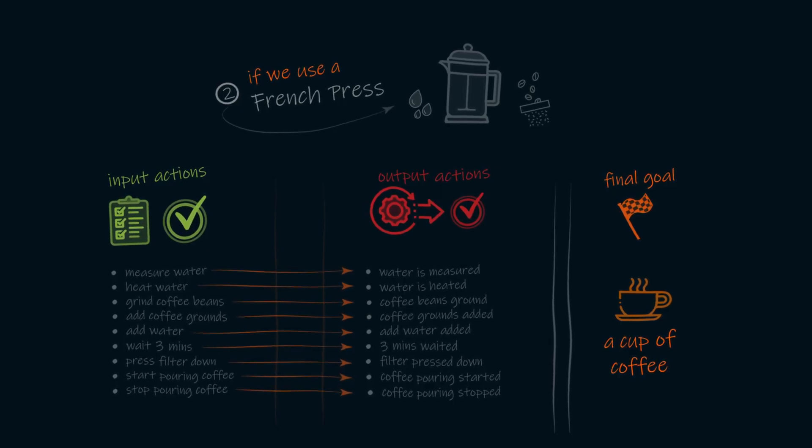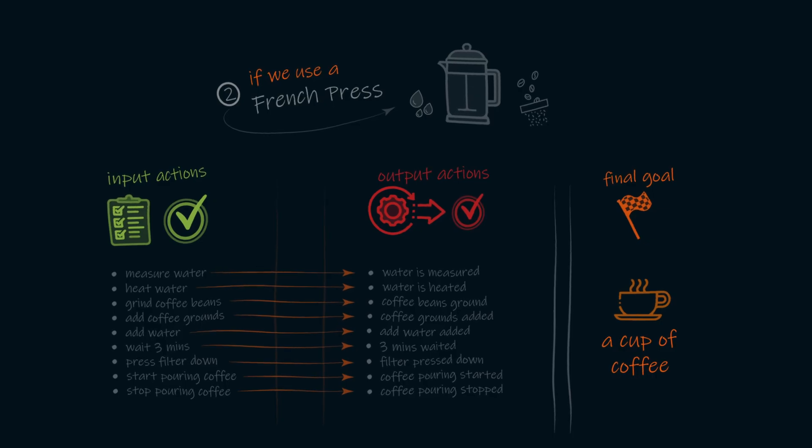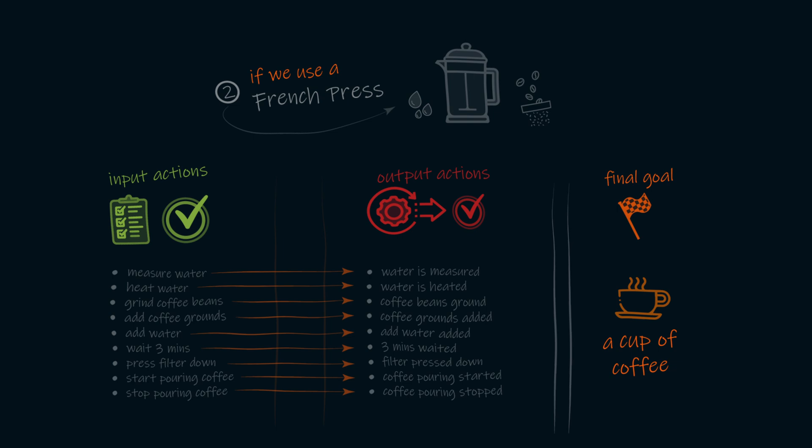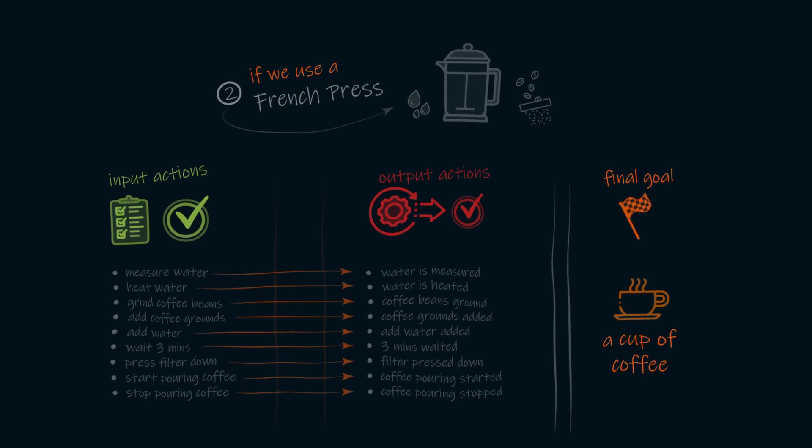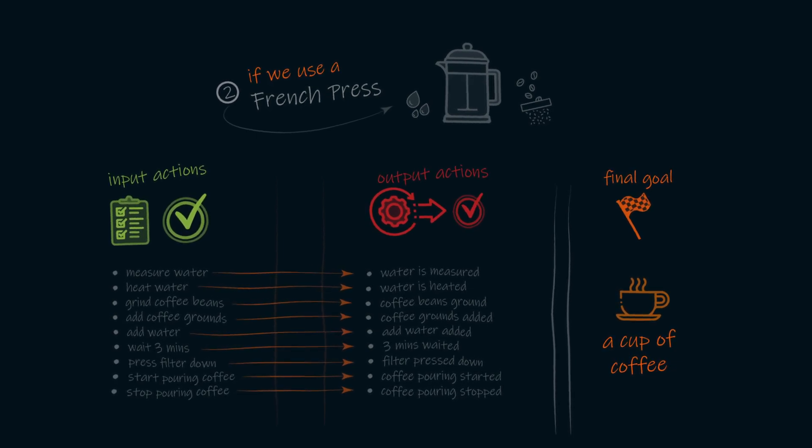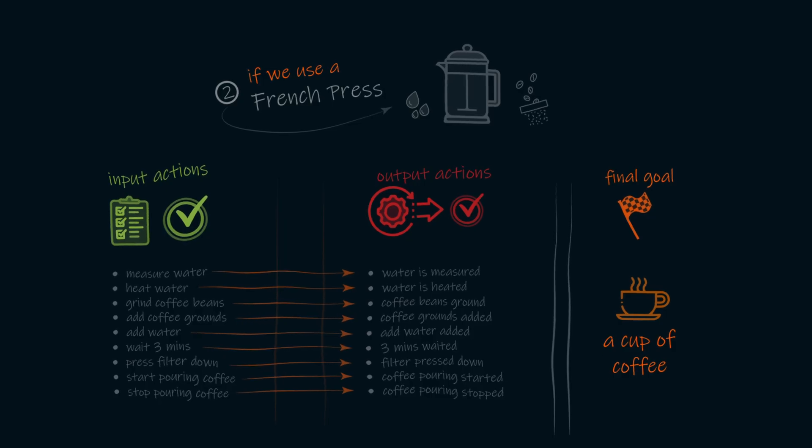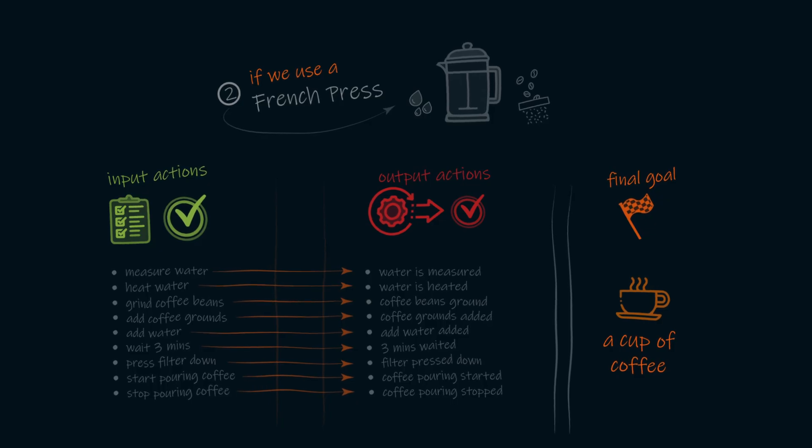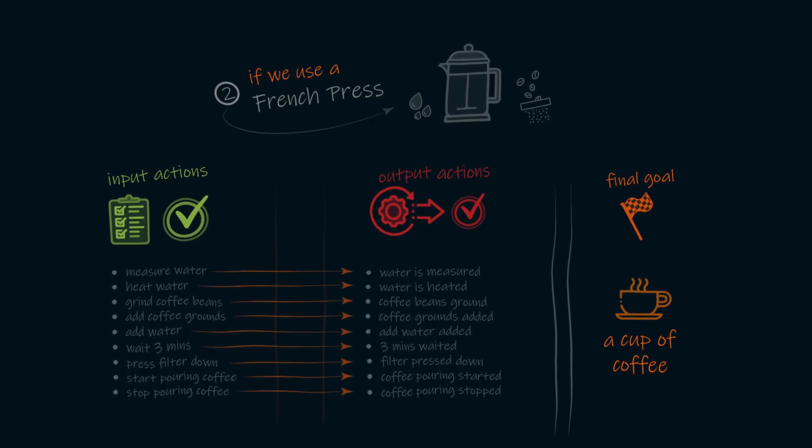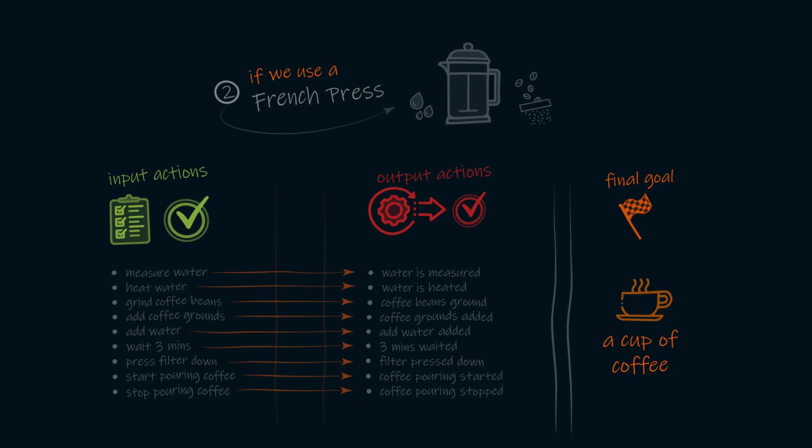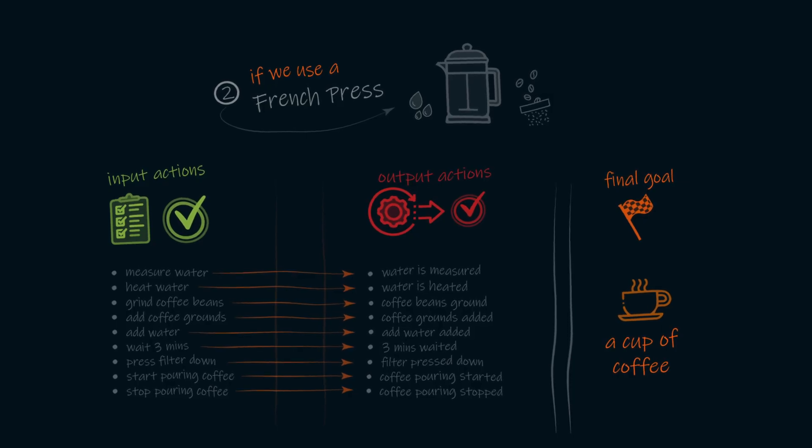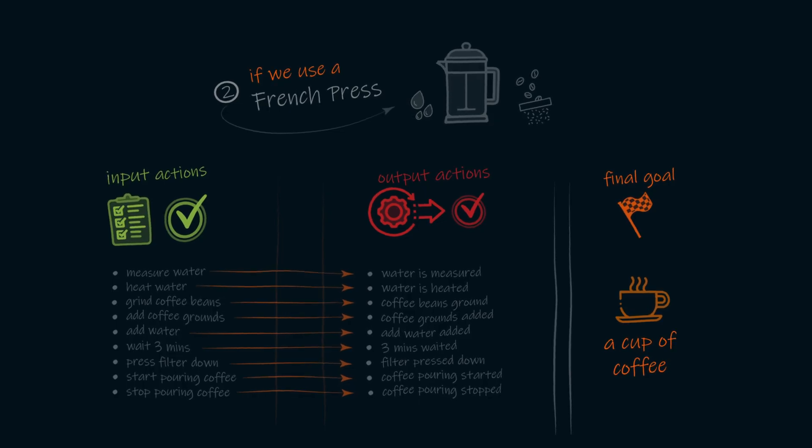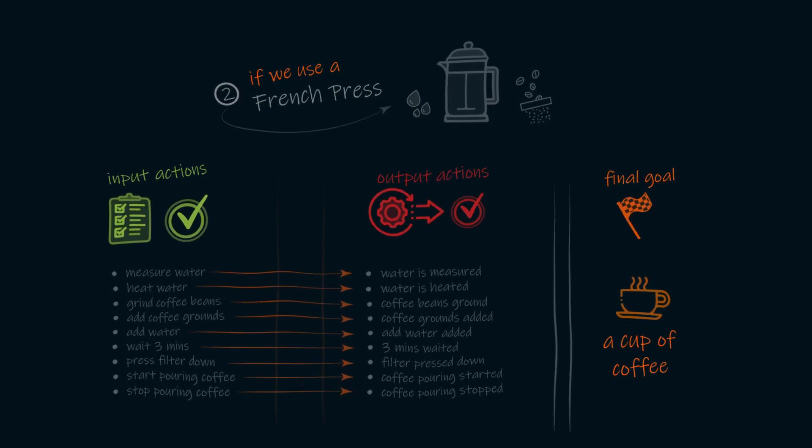As we measure the water, the water is measured. As we grind the coffee beans, the beans are ground. And as we start and stop pouring the coffee, the coffee is poured and then not poured. In this case, although the list of actions might be a bit longer, we now have 100% clarity on what is happening and what is actually being done to make the cup of coffee. So in this situation, we would say that none of the details have been abstracted away from us.